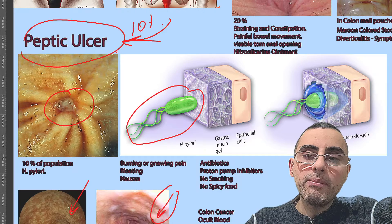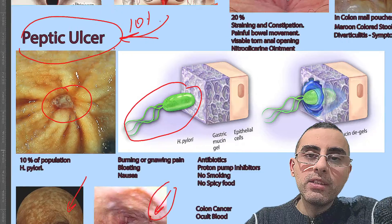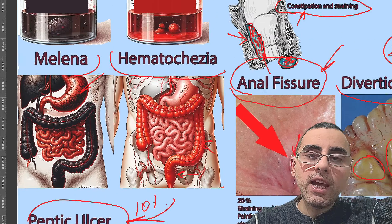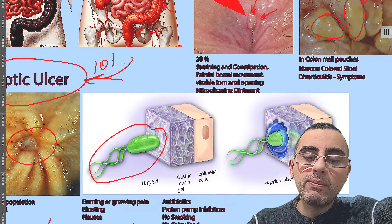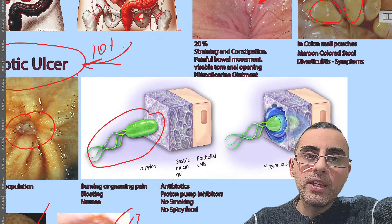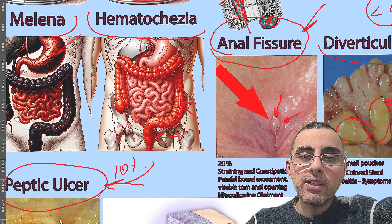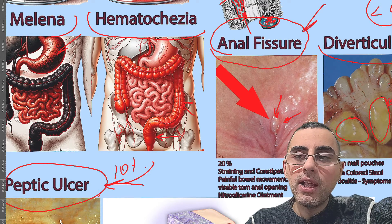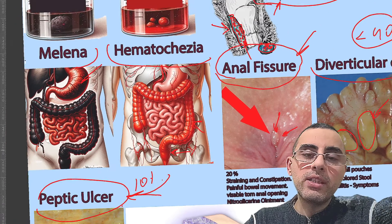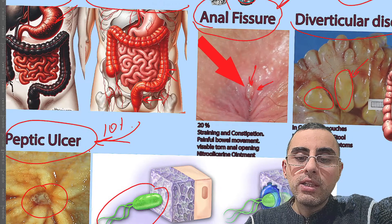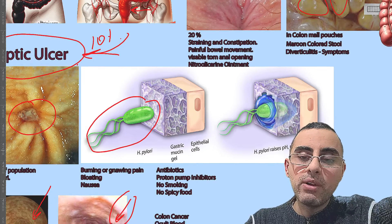You should also know about occult blood — when there is blood in the stool but you cannot notice it with the naked eye. It is called occult blood or occult bleeding in the stool. It can be caused by different conditions including gastritis, peptic ulcer, and colon cancer. These are cases where blood in the stool cannot be detected without a microscope or special test.